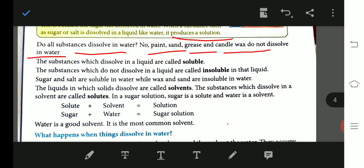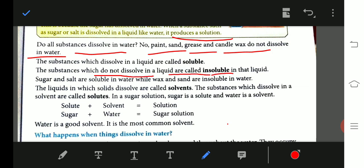The substances which do not dissolve in water or liquid are called insoluble substances. Substances that do not dissolve in water are called insoluble substances. Sugar and salt are soluble in water, while wax and sand are not soluble in water.